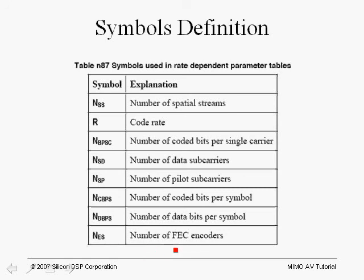NSS is also the number of FEC encoders, and in our case it's always going to be equal to 1. We won't deal with cases where you have two convolutional encoders. That's usually the case when you have very high throughput and, because of the limitations of hardware, you might have to actually use two Viterbi decoders.